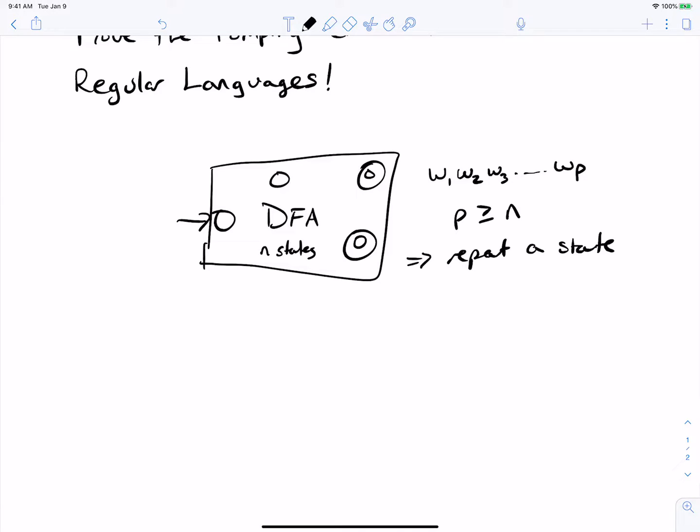So let's just say that this is the repeated state. That means we go from the start state to this state, and then some number of transitions back to the same state because we repeated it, and then eventually we go to an accept state. And also, let's just assume that this is in the language of the machine, so it is an accepted string.